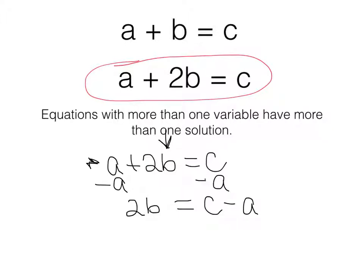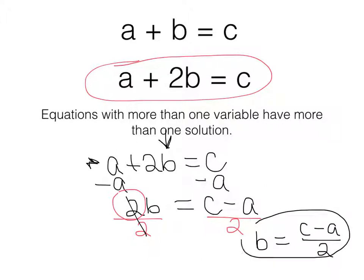Now I have this 2 in front of the b. The inverse operation of multiplying by 2 is to divide. So my 2s will cancel, and my final result will be b is equal to c minus a divided by 2. Check your work. If you got this answer, good job. If not, fix your notes so that you have this as an example.